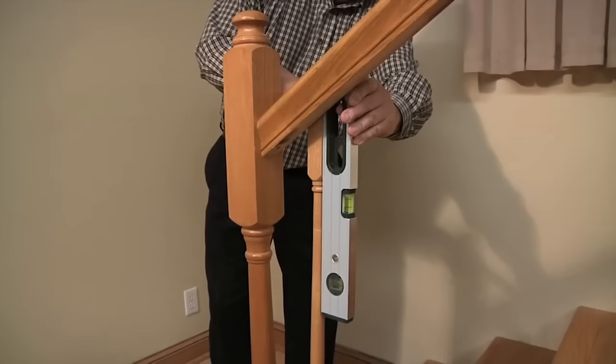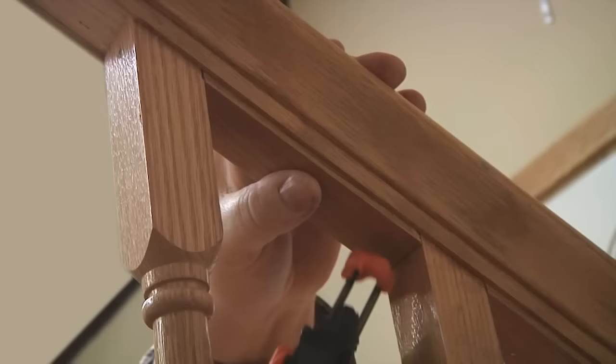Before installing, check for level, then glue and nail into place. Finally, the fillet pieces which fit under the handrail between each baluster are cut and secured into place.